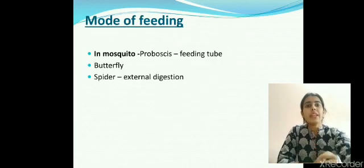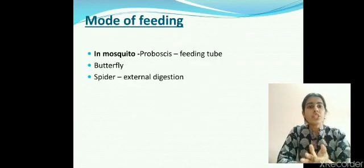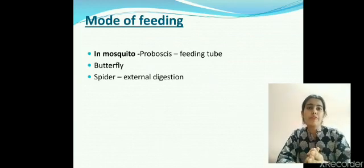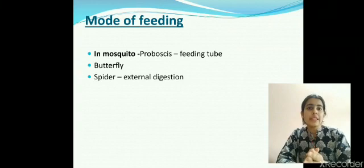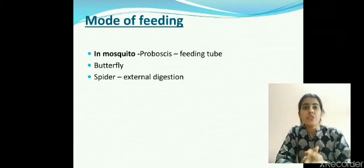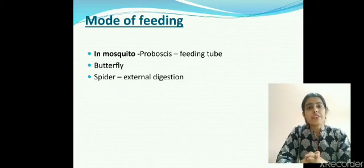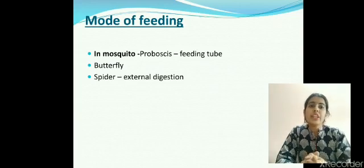Next is the mode of feeding in mosquito and butterfly. In mosquito and butterfly, they have a sharp feeding tube. This feeding tube can be related to a straw which we use for sucking juice. Similarly, a mosquito or a butterfly is able to suck nectar from a flower with the use of this feeding tube. This feeding tube is also called a proboscis.